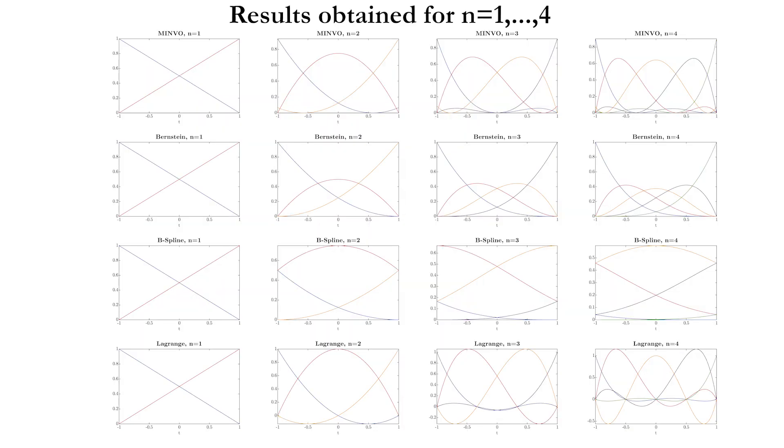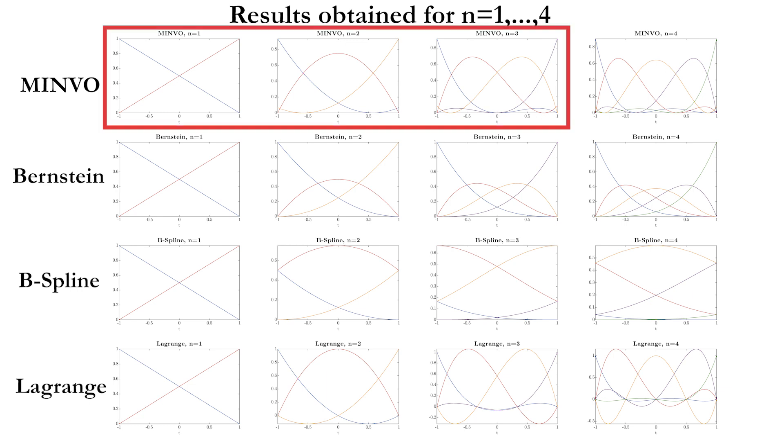Using sum of squares programming, we obtain the solutions shown here. We compare them with the Bernstein, B-spline, and Lagrange bases. By using moment relaxations and branch and bound, we prove numerically that the solutions for n equals 1 to 3 are globally optimal solutions.